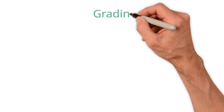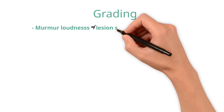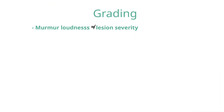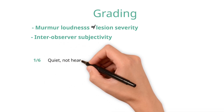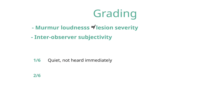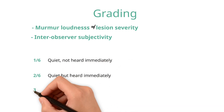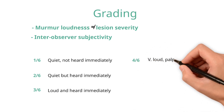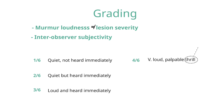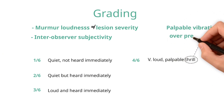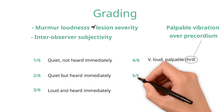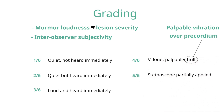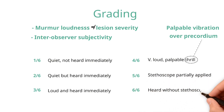Murmurs can also be graded by their maximum intensity out of six, though murmur loudness does not always correspond to valve lesion severity and there is a degree of subjectivity. A 1/6 murmur is quiet and only audible after listening for a while. A 2/6 murmur is quiet but audible immediately. A 3/6 murmur is loud and audible immediately. A 4/6 murmur is loud and associated with a palpable thrill — a vibration palpable with the hand on the chest wall. A 5/6 murmur is very loud and audible with the stethoscope only partially touching the chest. A 6/6 murmur is audible without a stethoscope.